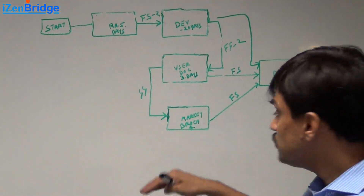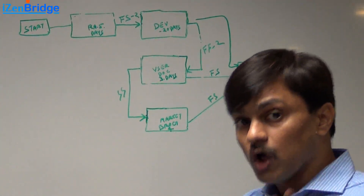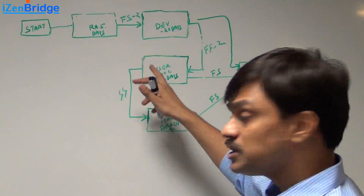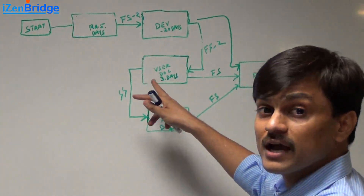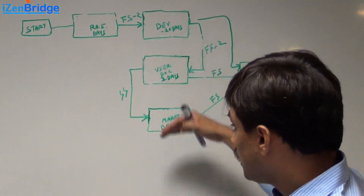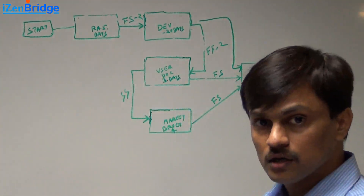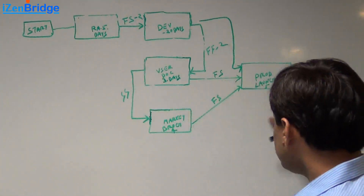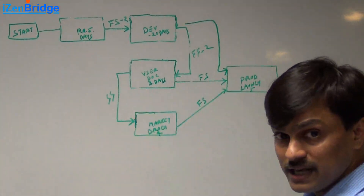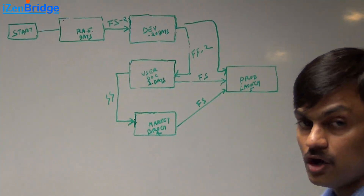Along with user documentation, we also want to start a marketing brochure preparation activity because the final product will go along with the marketing material. The marketing team is just waiting for the user manual team — whenever the user manual team starts their work, they also want to start. So it's a start-to-start relationship with no lead or lag. Finally, we have a product launch activity which will take 5 days and requires all three things to be ready — development, user documentation, and marketing brochure.